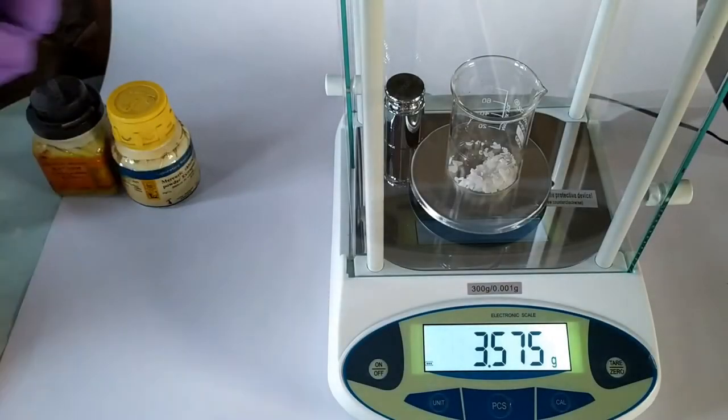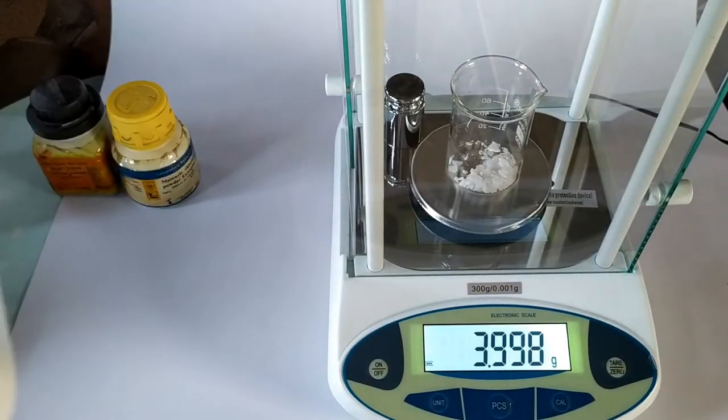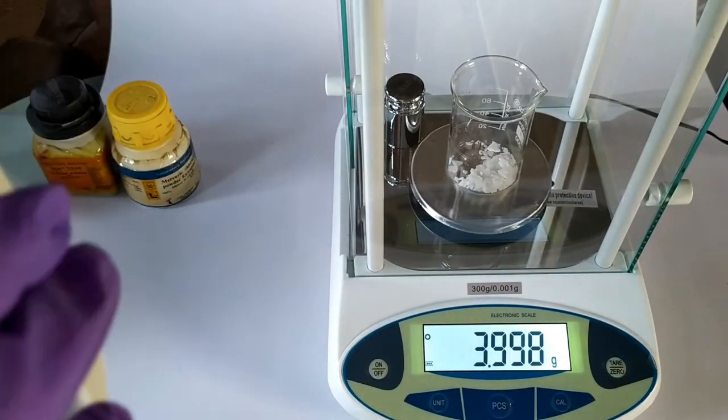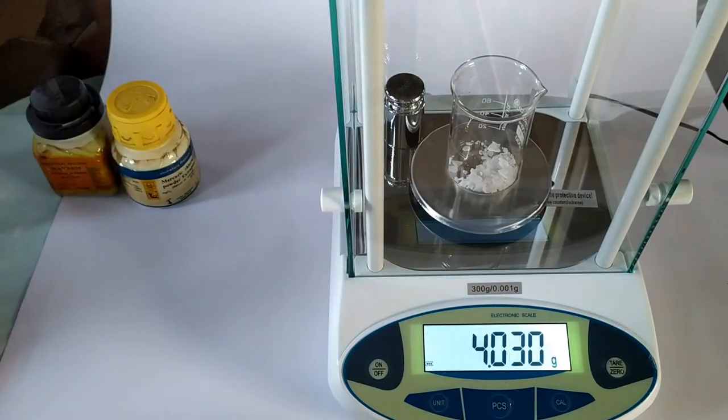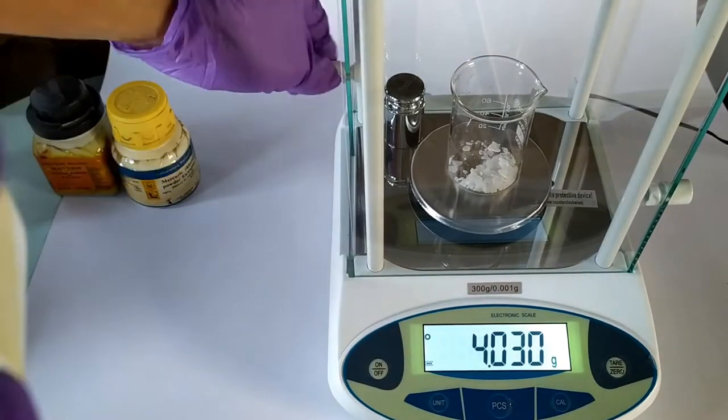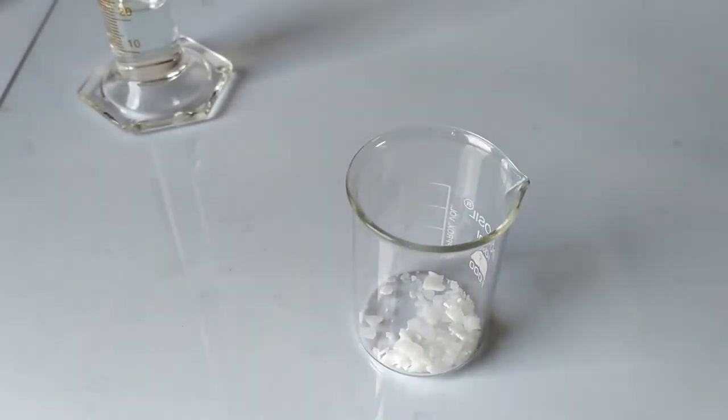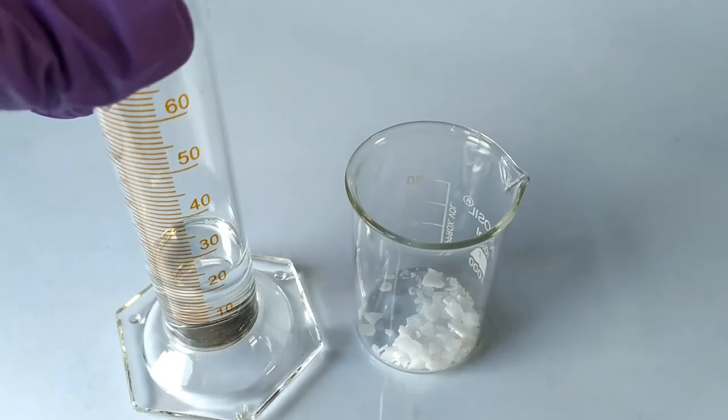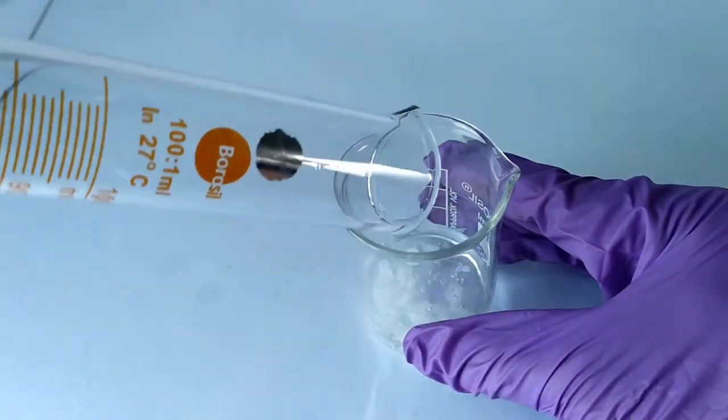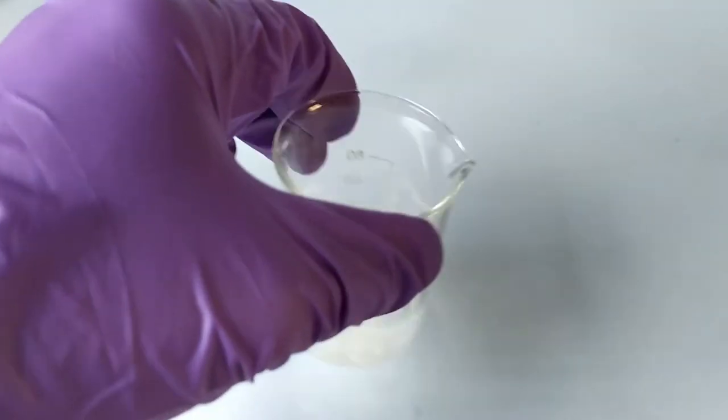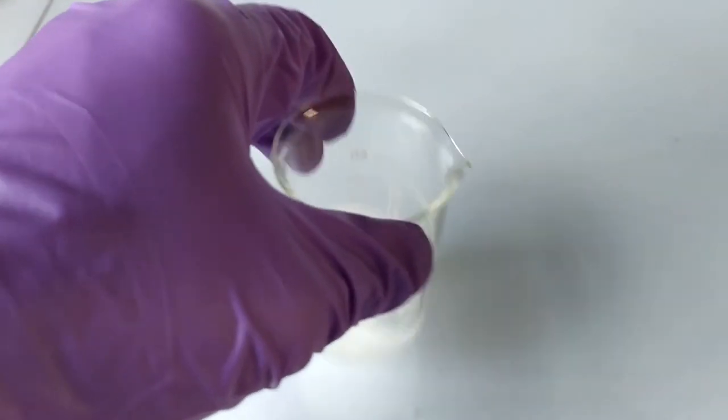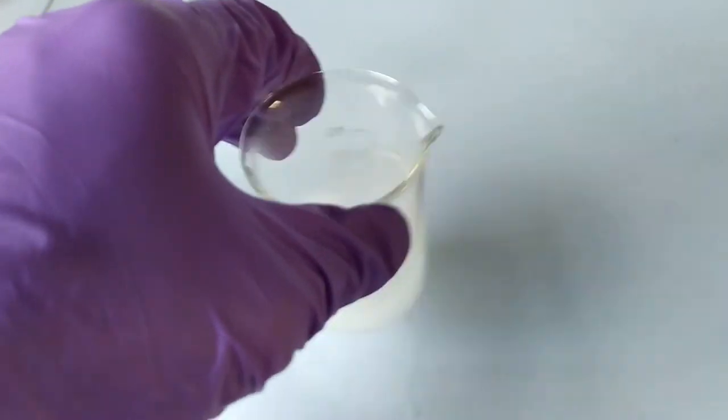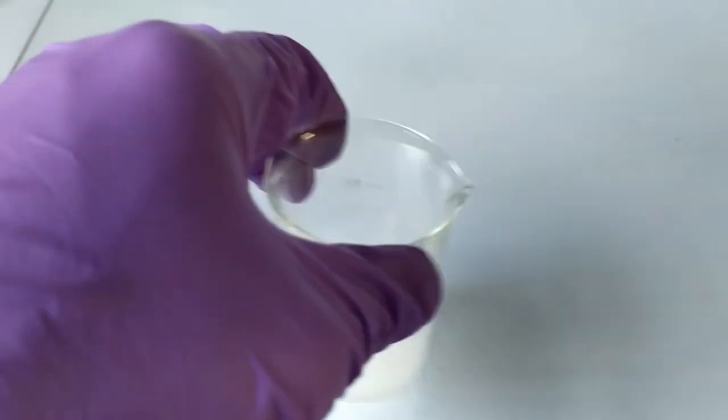Now weigh 4 grams of sodium hydroxide in the third beaker. Dissolve it in about 20 to 30 ml of distilled water. Allow it to cool to room temperature. Alternatively, you can directly use 20 ml of 5 molar or 5 normal sodium hydroxide solution. It's the same either way. Also keep this beaker aside.